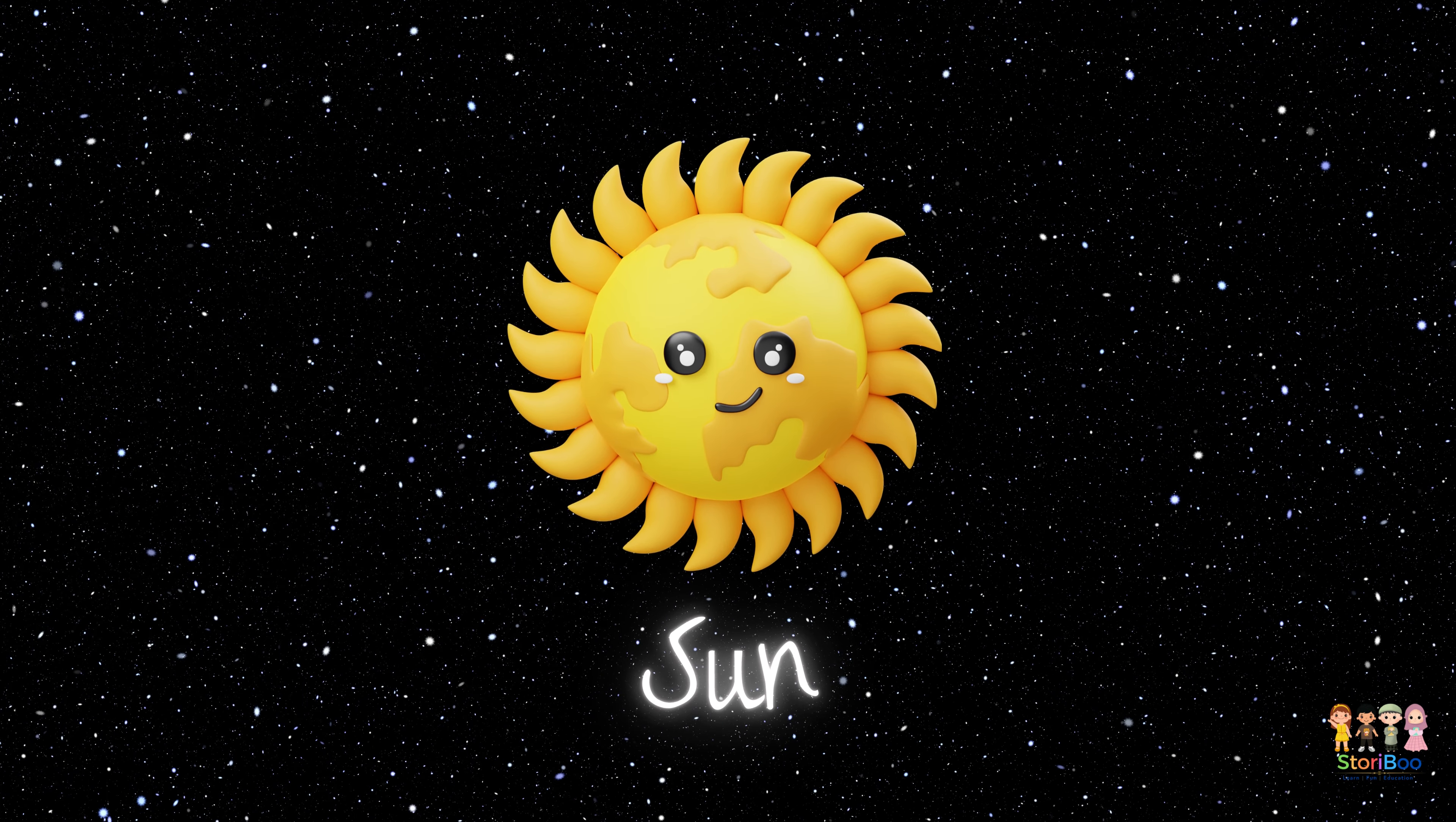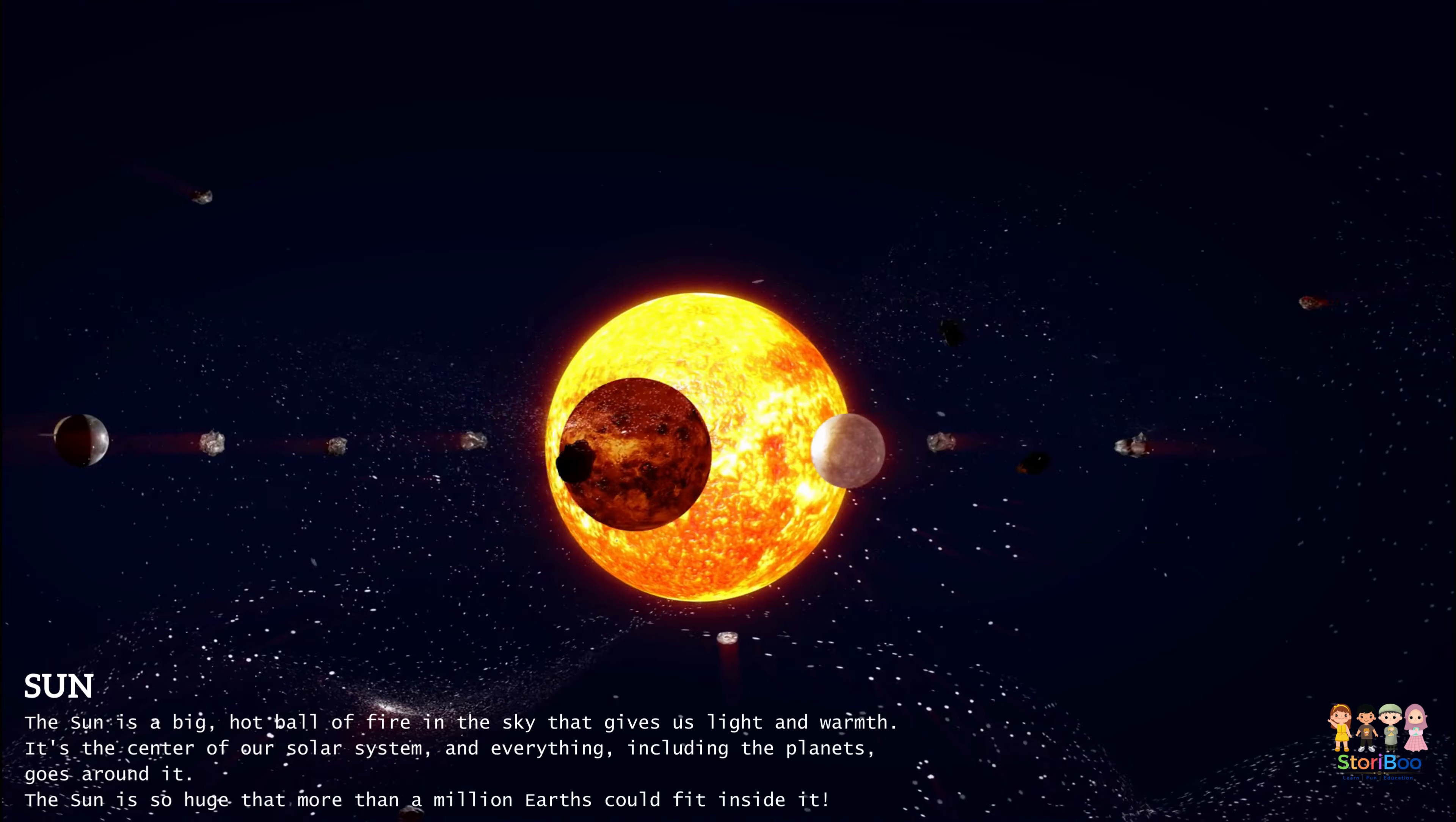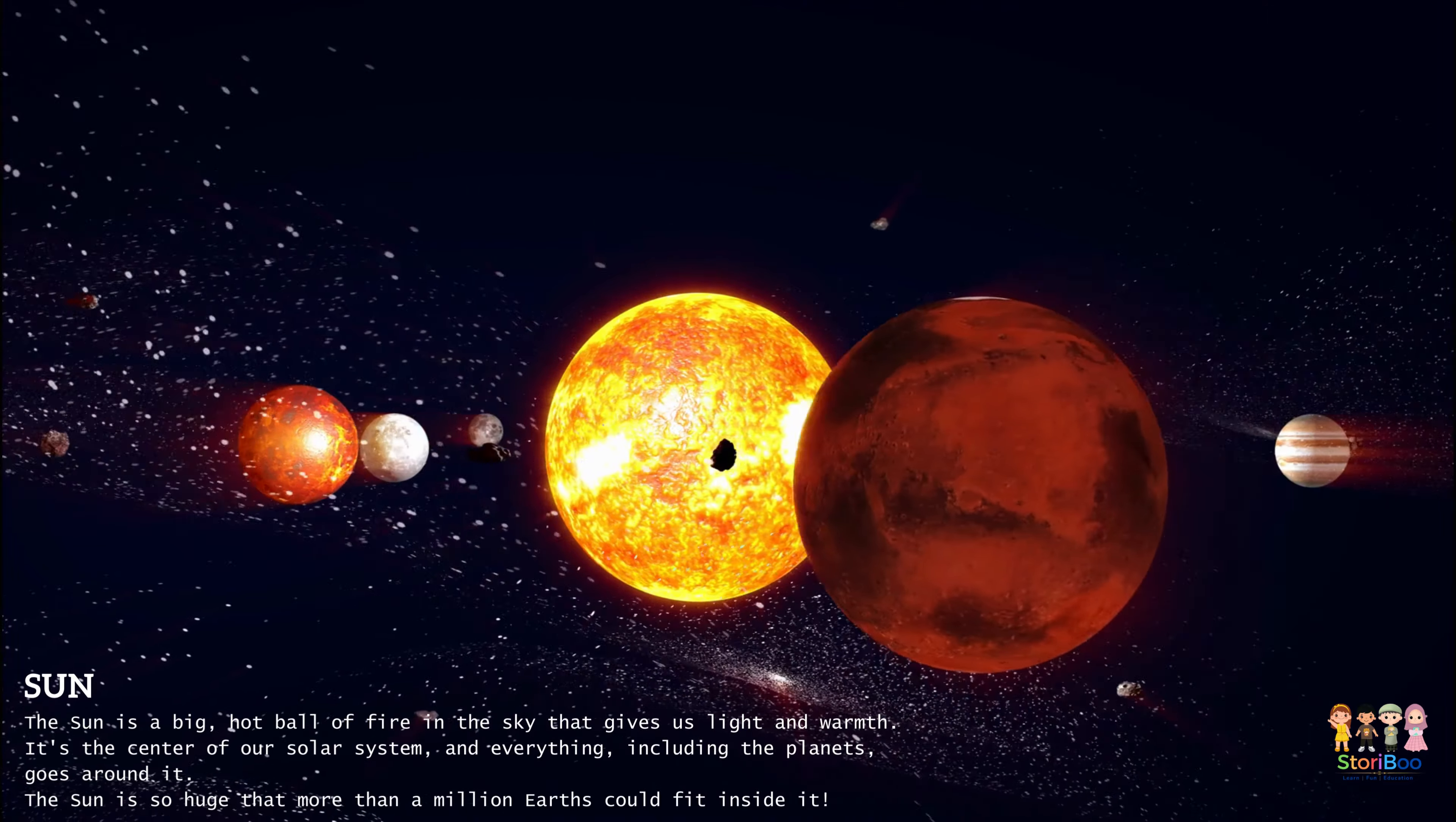The sun is a big hot ball of fire in the sky that gives us light and warmth. It's the center of our solar system and everything, including the planets, goes around it. The sun is so huge that more than a million Earths could fit inside it.